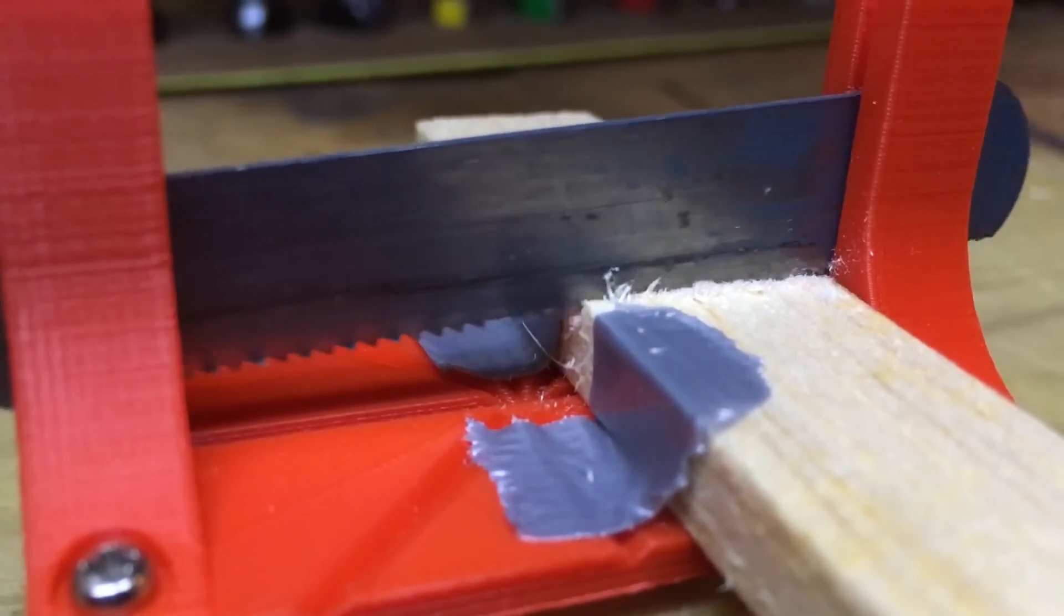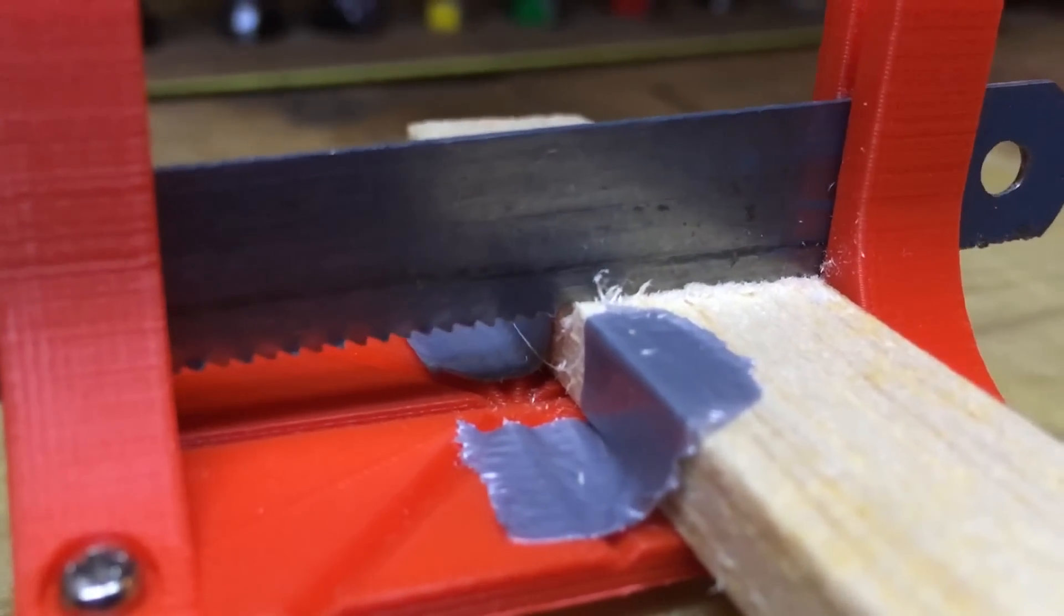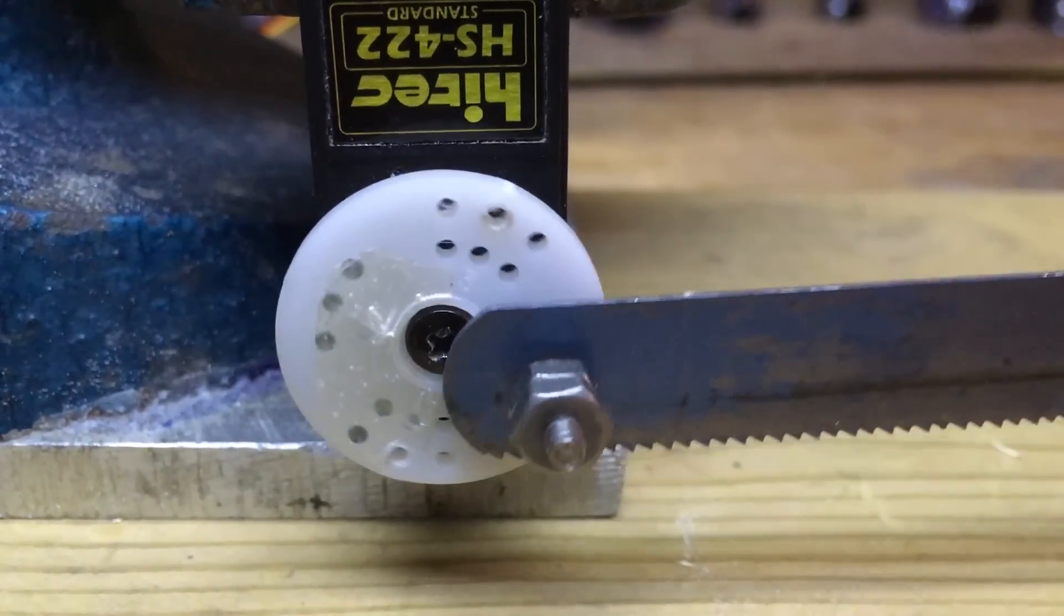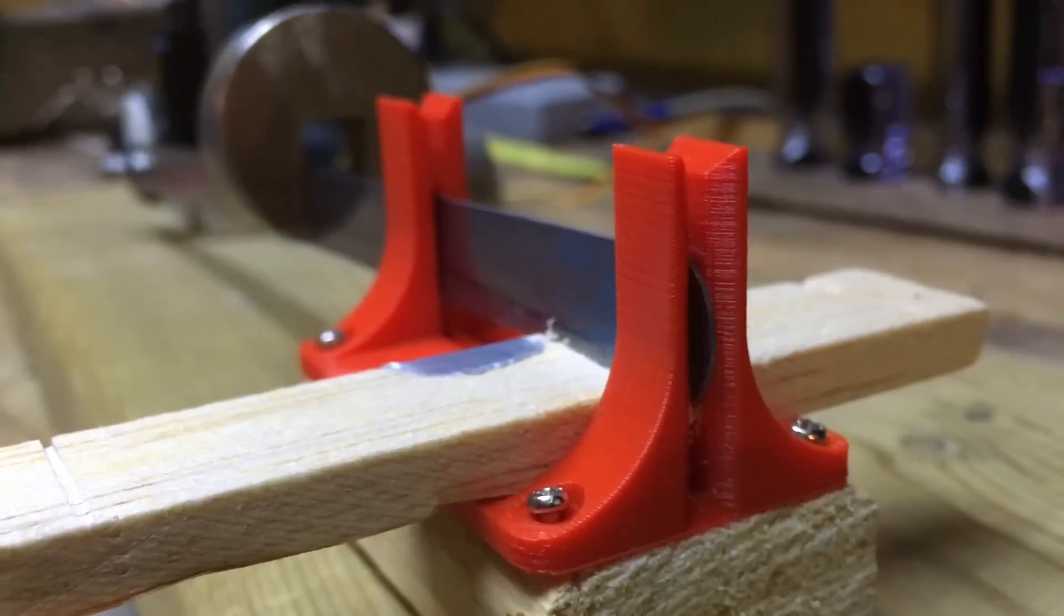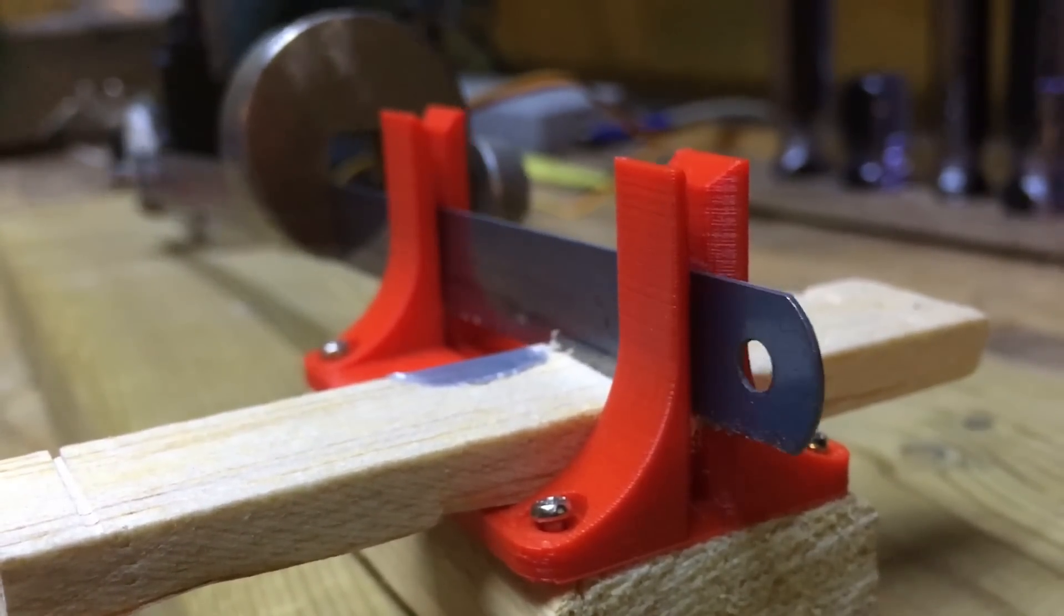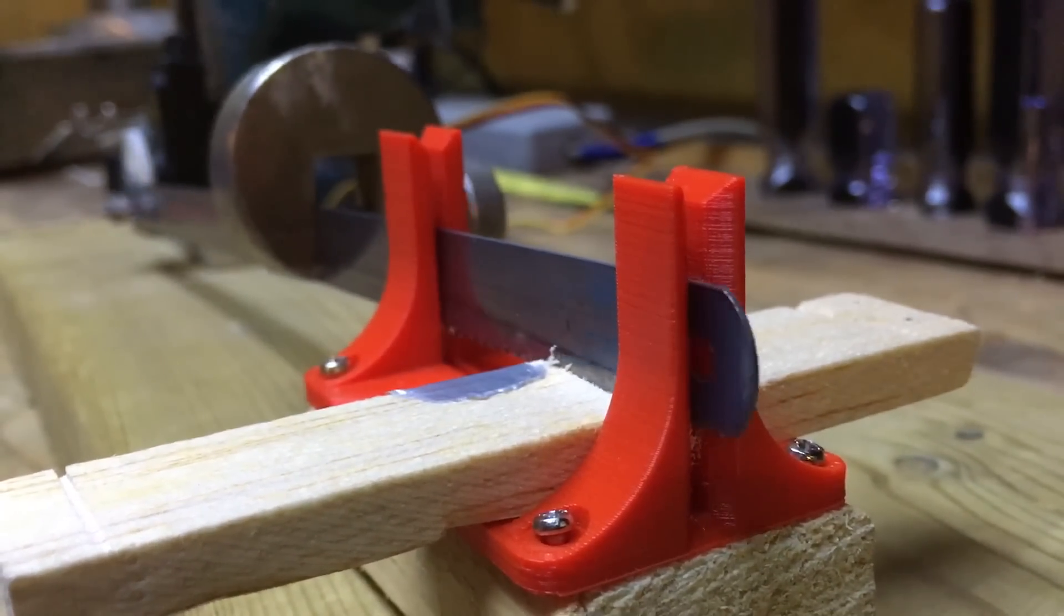I have here one of my finest inventions, the world's slowest saw, with top speeds of 1 cm per hour for balsa wood, patent pending.